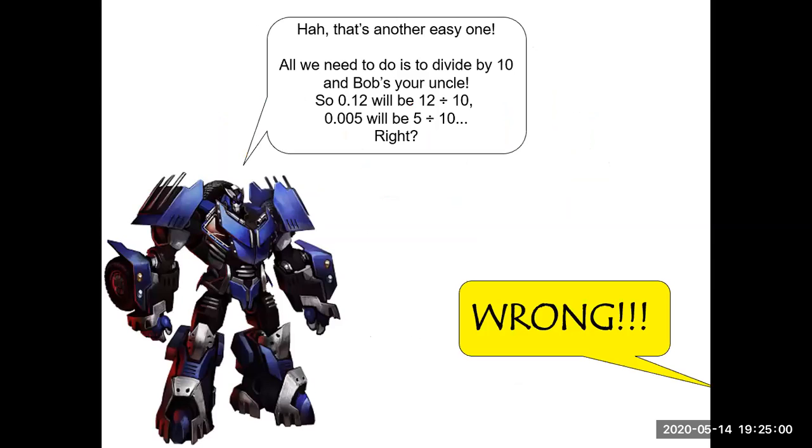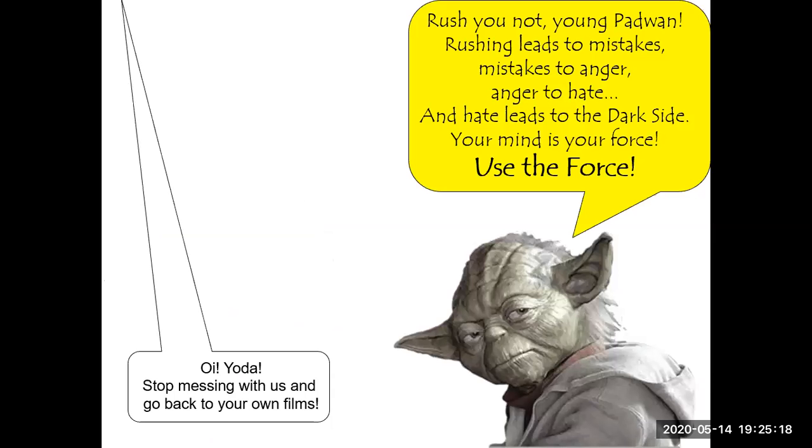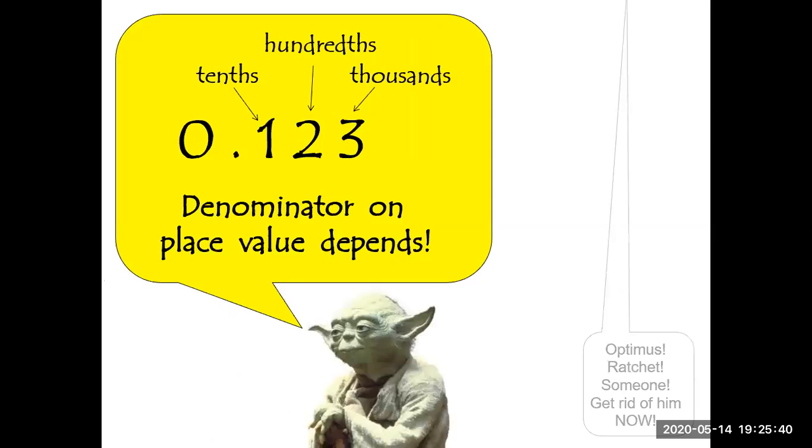Ha, that's another easy one! All we need to do is divide by 10 and Bob's your uncle. So 0.12 will be 12 divided by 10, and 0.005 will be 5 divided by 10. Right? Wrong! Rush you not, young Padawan. Rushing leads to mistakes, mistakes to anger, anger to hate, and hate leads to the dark side. Your mind is your force. Tenths, hundredths, thousandths - denominator on place value depends. Optimus, Ratchet, someone get rid of him now!